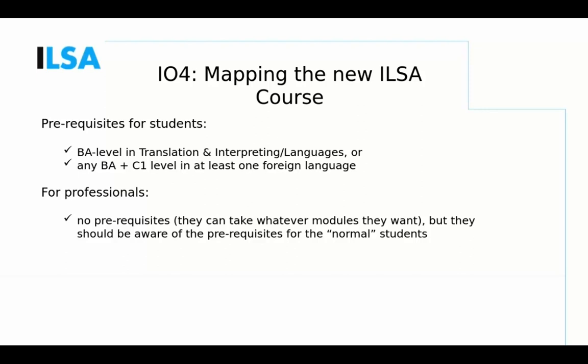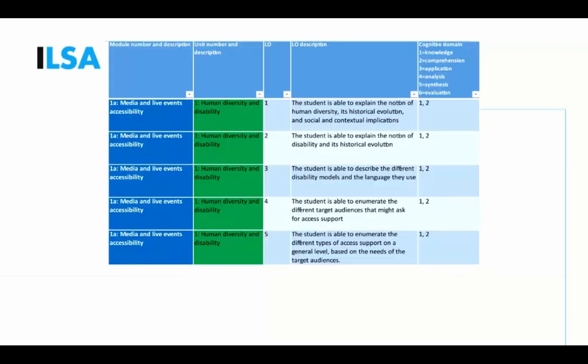We expect modules 1b and 1c to be offered in masters in translation or interpreting, but module 1a on accessibility may not be easily available in existing programs. Regarding prerequisites, we developed the course with the following student profile in mind: students should have a BA in translation and interpreting, languages, or any BA with a C1 level in at least one foreign language. For professionals, there are no formal prerequisites.